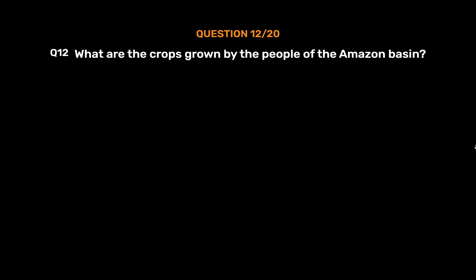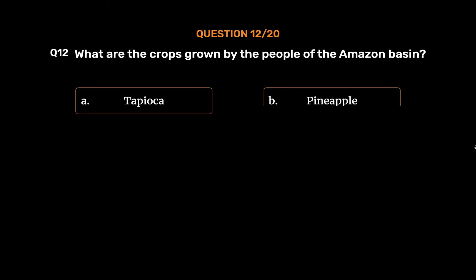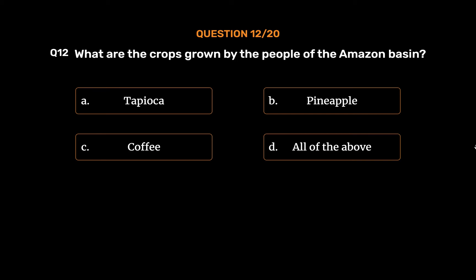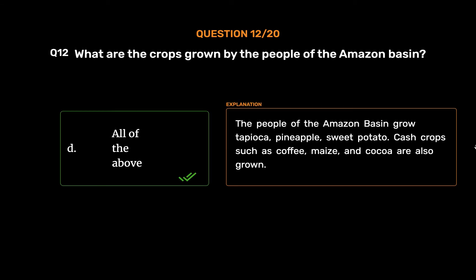Question number 12. What are the crops grown by the people of the Amazon basin? Option A: Tapioca. Option B: Pineapple. Option C: Coffee. Option D: All of the above. The correct answer is Option D, All of the above. The people of the Amazon basin grow tapioca, pineapple, and sweet potato. Cash crops such as coffee, maize, and cocoa are also grown.